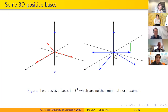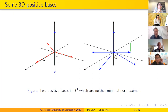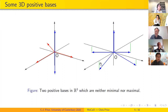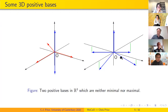Here are some positive bases in three dimensions, neither minimal nor maximal. The one on the left is composed of two sub-bases: the three red arrows form a minimal positive basis for the horizontal plane, and the two blue arrows form a maximal and minimal positive basis for the vertical direction. Here's an example that isn't decomposable into sub-bases — four roughly horizontal directions along coordinate axes and one vertically upward direction.